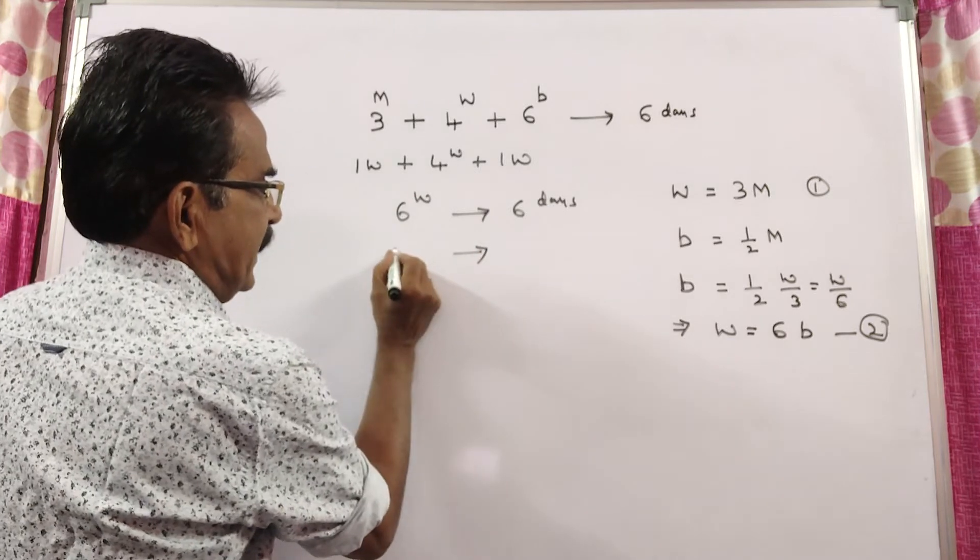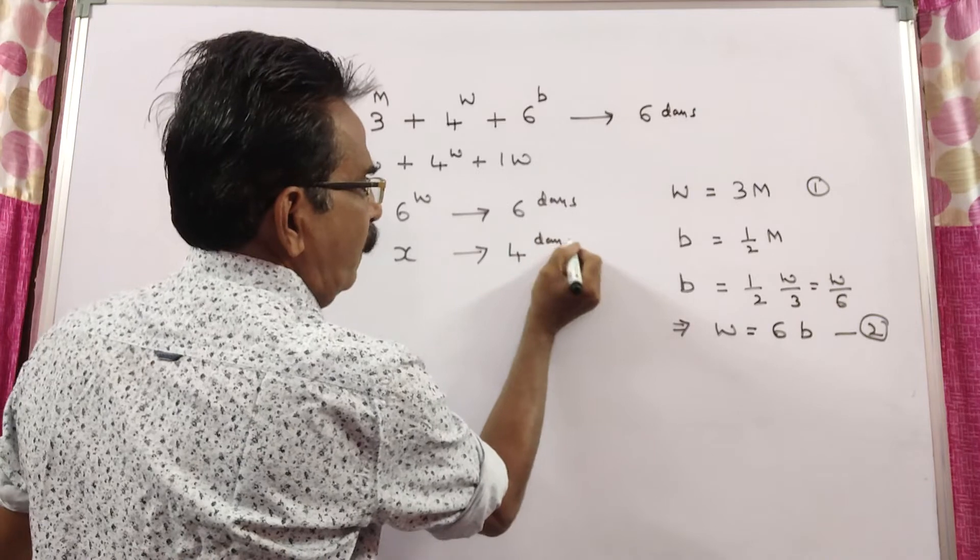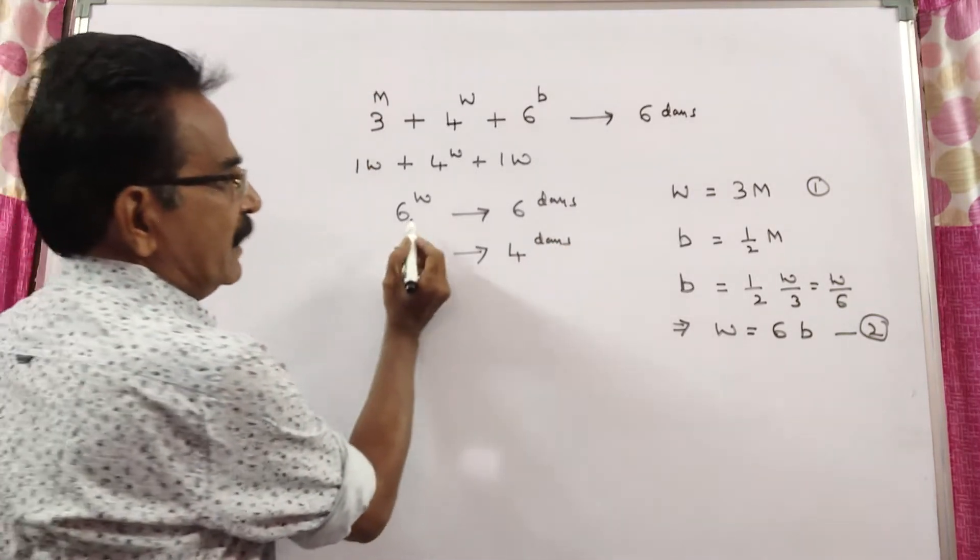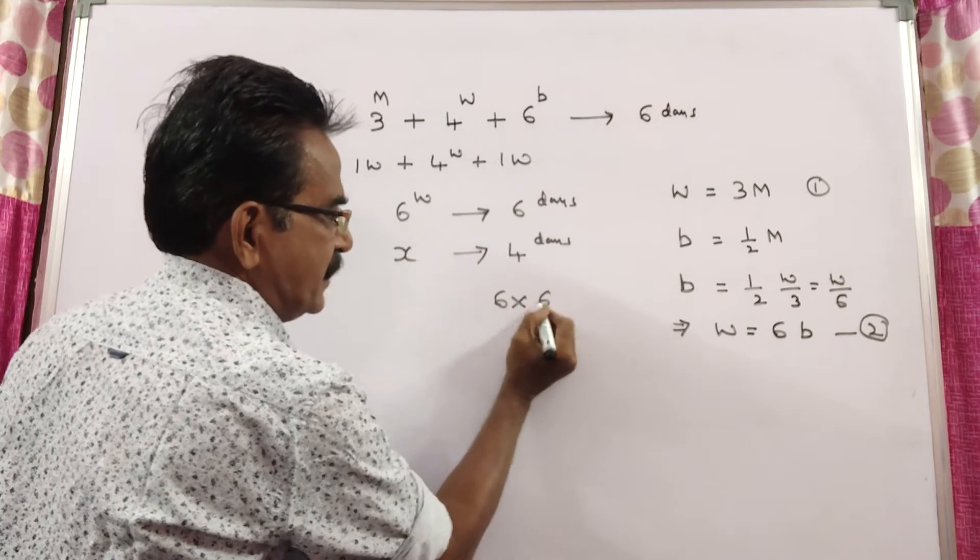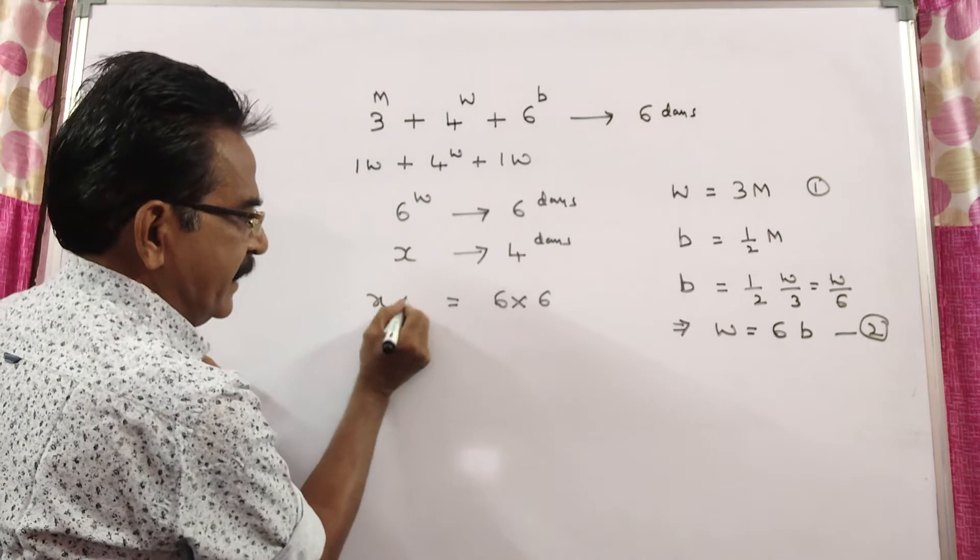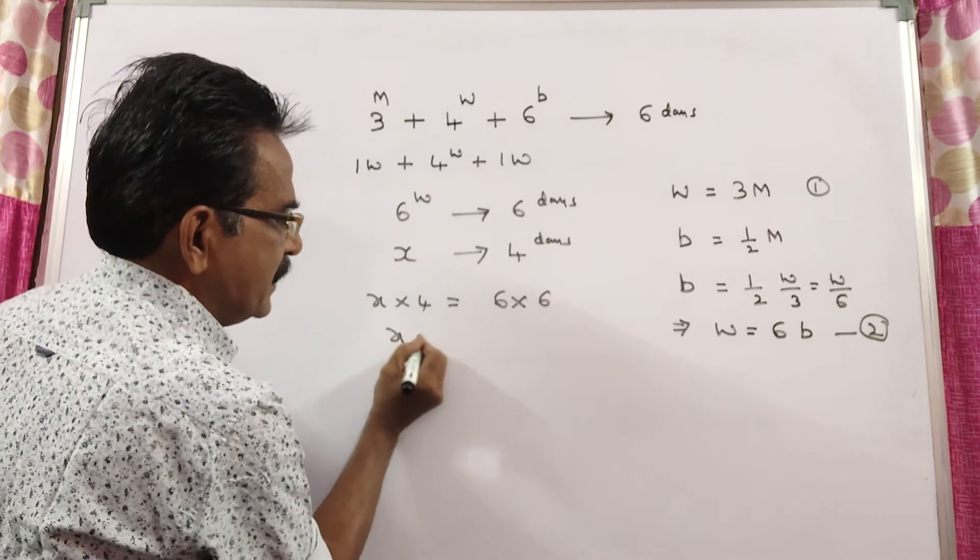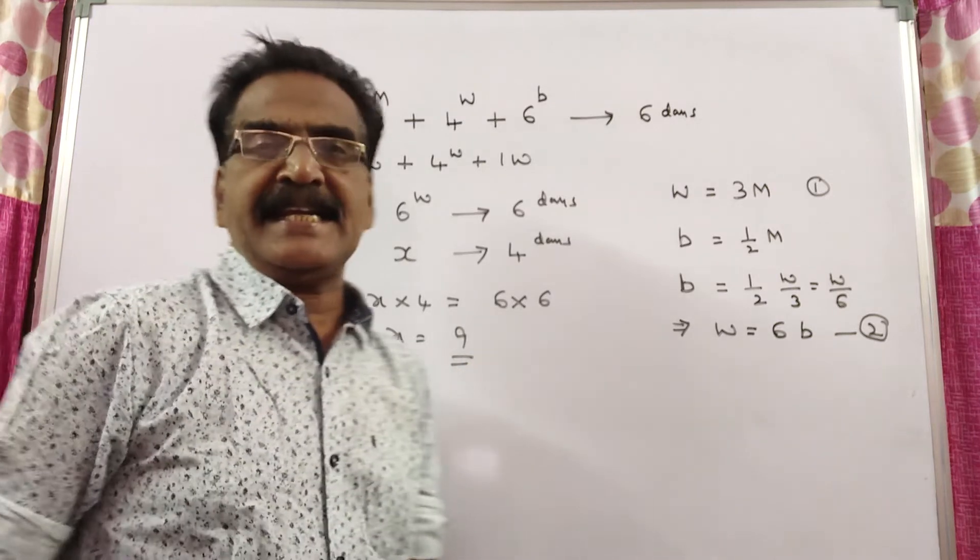So, let us say, X men can complete the work in 4 days. So, now the work done by 6 women in 6 days is equal to the work done by X women in 4 days. That is, X into 4. X is equal to 36 by 4, 9 days. 9 is your answer.